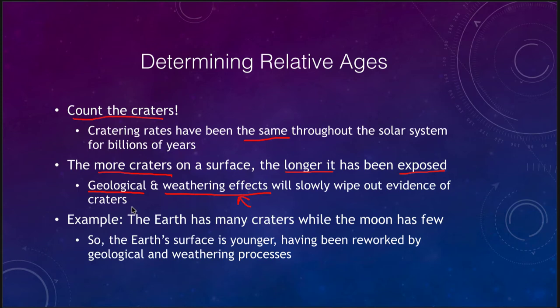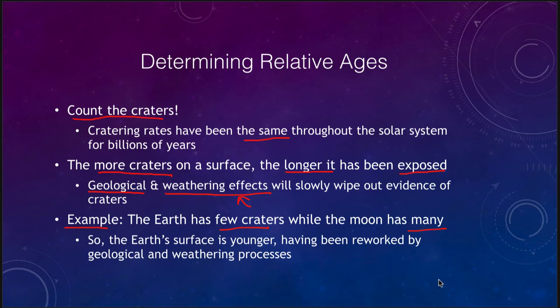Geological activity, weathering effects, and the presence of an atmosphere can really affect the number of craters we will see on an object. So if we look at our example here, the Earth has very few craters while the moon has many. That tells us that the Earth's surface is younger and has been reworked by geological and weathering processes. Over billions of years, Earth's craters have been wiped out leaving only the most recent ones, while many of the craters that ever formed on the moon are still there.